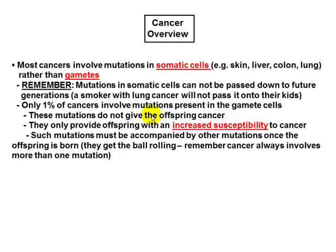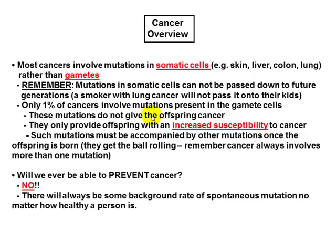Most cancers involve mutations in somatic cells. That means most of the time you don't really inherit any type of cancer — you can inherit susceptibility in the genes, but mainly it involves somatic cells rather than gametes. Somatic cells cannot be passed down to future generations. Will we ever be able to prevent cancer? The answer is no, because mutations happen every day. Eventually, there's going to be some mutation that takes hold, and then you'll develop some cancer.